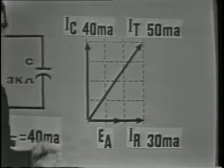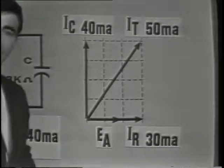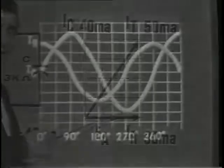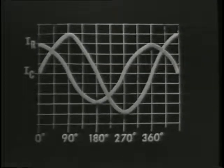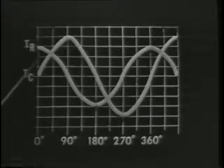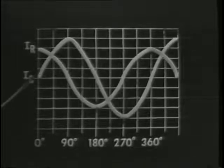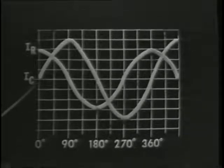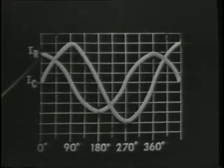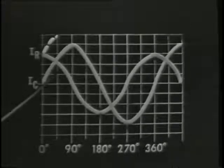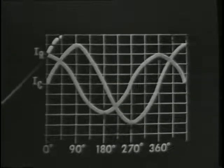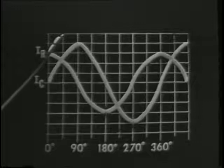The reason these two currents cannot be added together is because they don't occur at the same time. We know that IC and IR are 90 degrees apart. If we plot the waveforms of these two currents, we will see that the resultant current will be greater than either of them but less than the arithmetical sum. At 0 degrees, IC is 0 and IR is 30 milliamps, so the current in the circuit would be 30 milliamps. At 45 degrees, IR is about 25 milliamps and IC about 25 milliamps, thus the total current would be 50 milliamps.